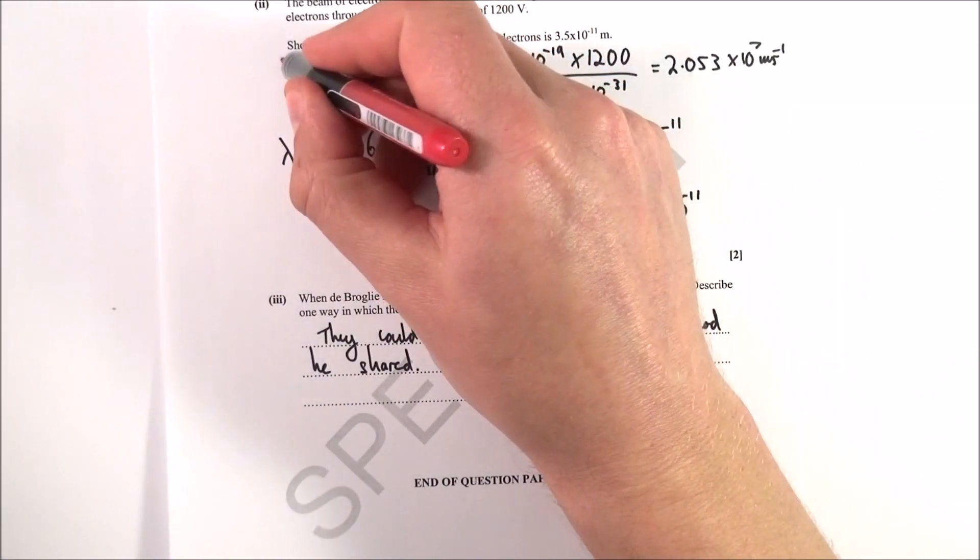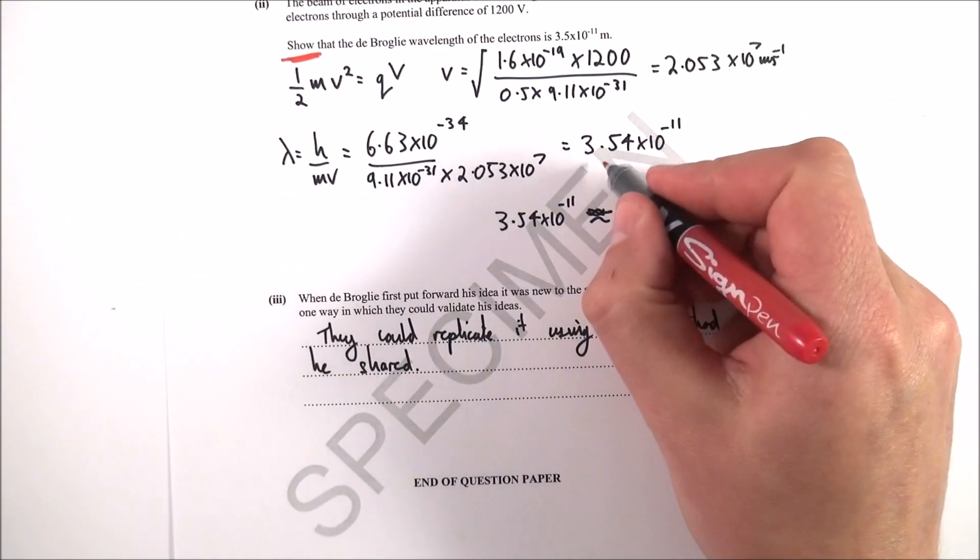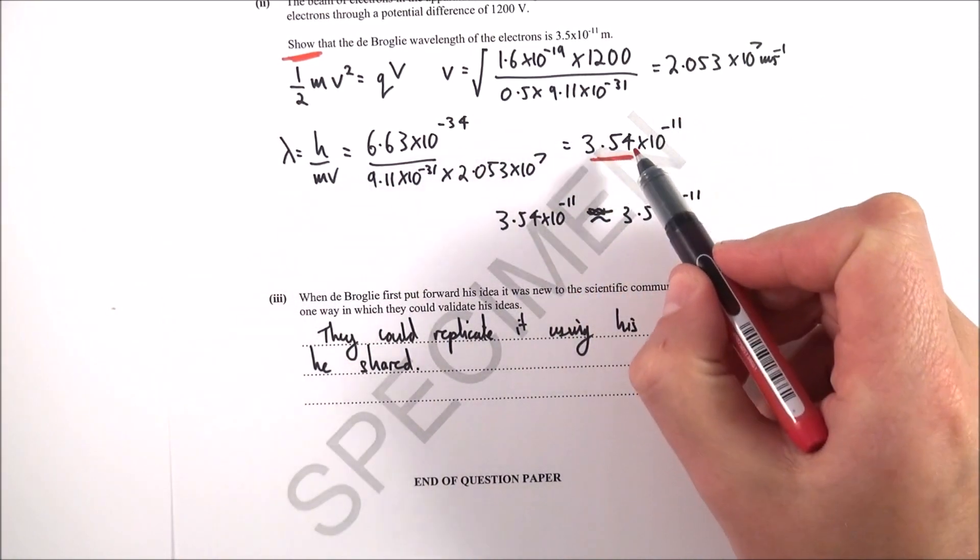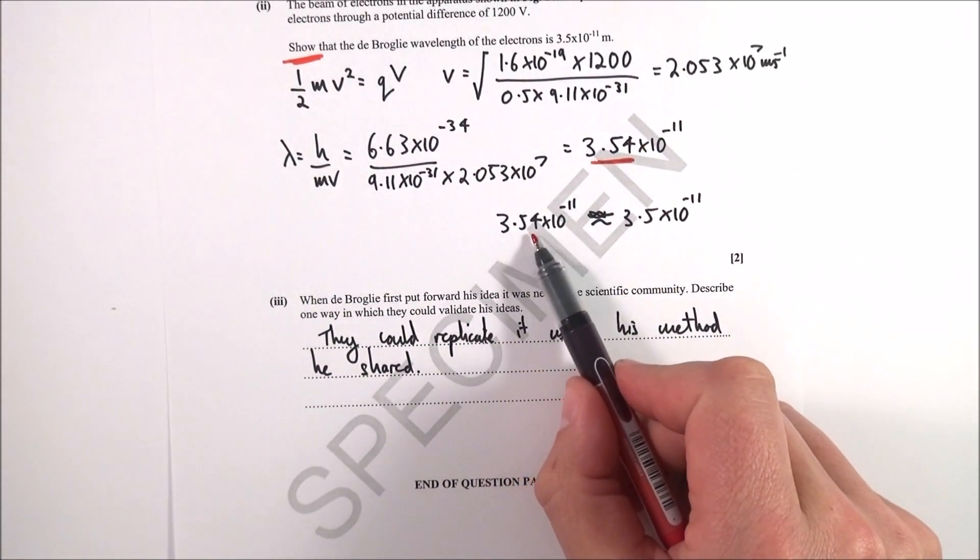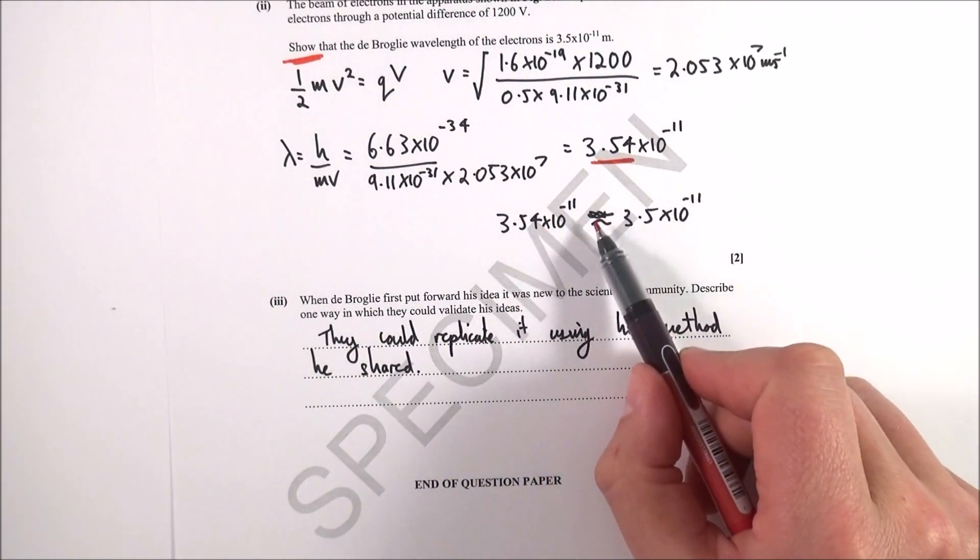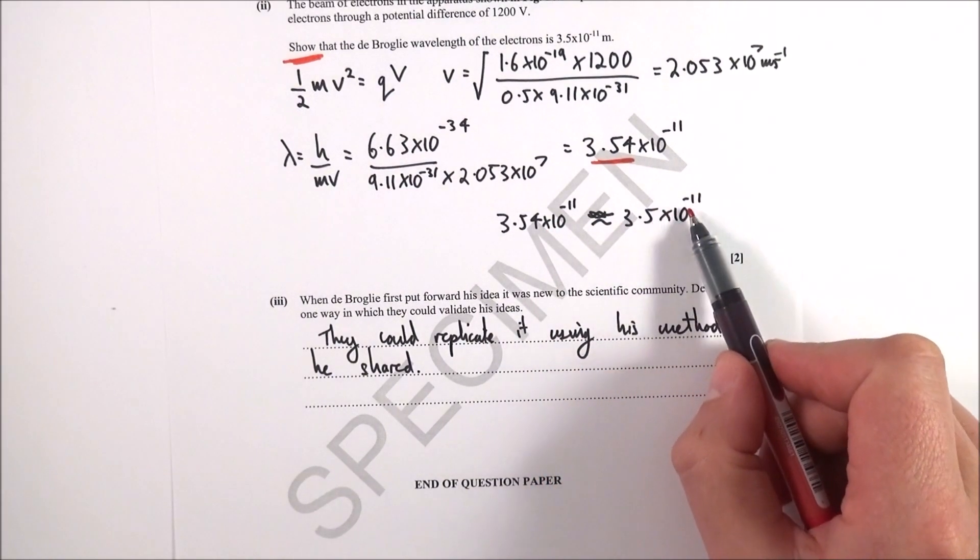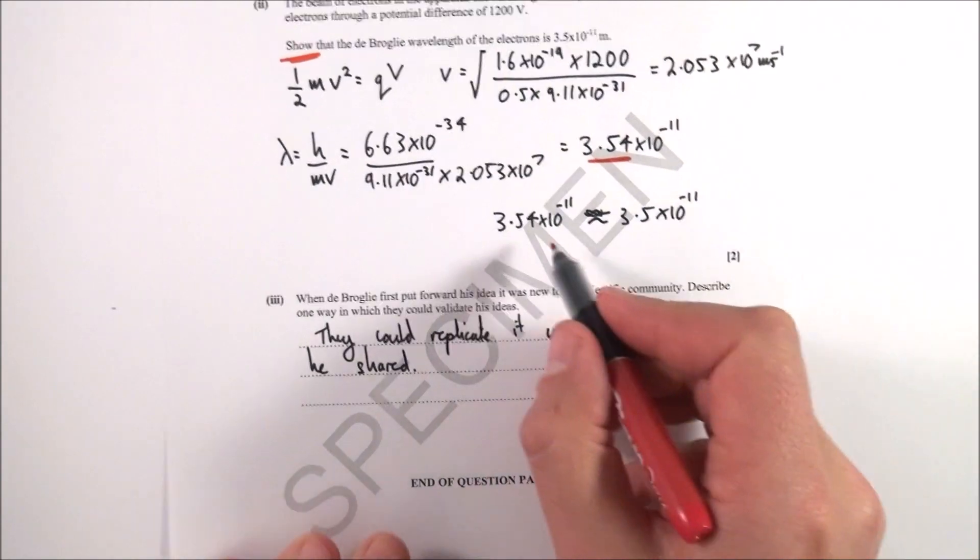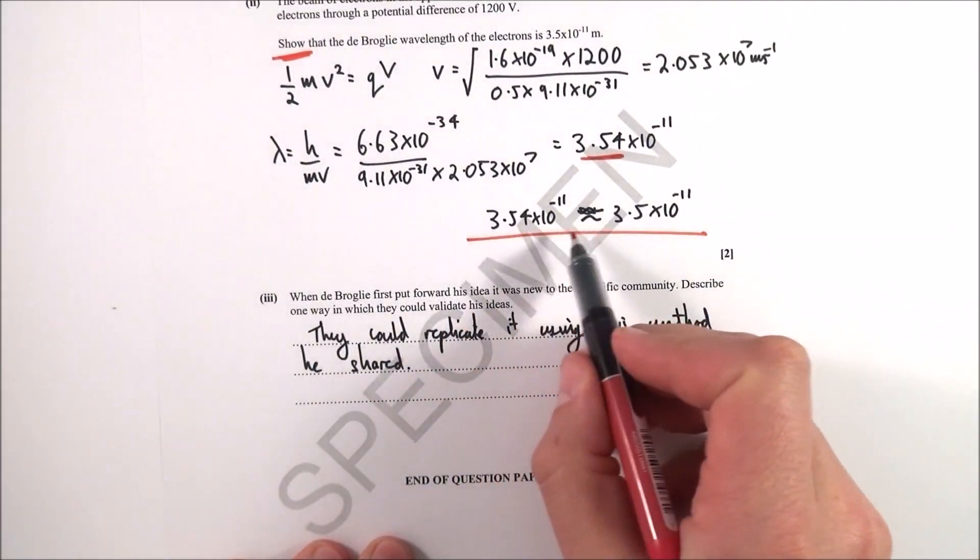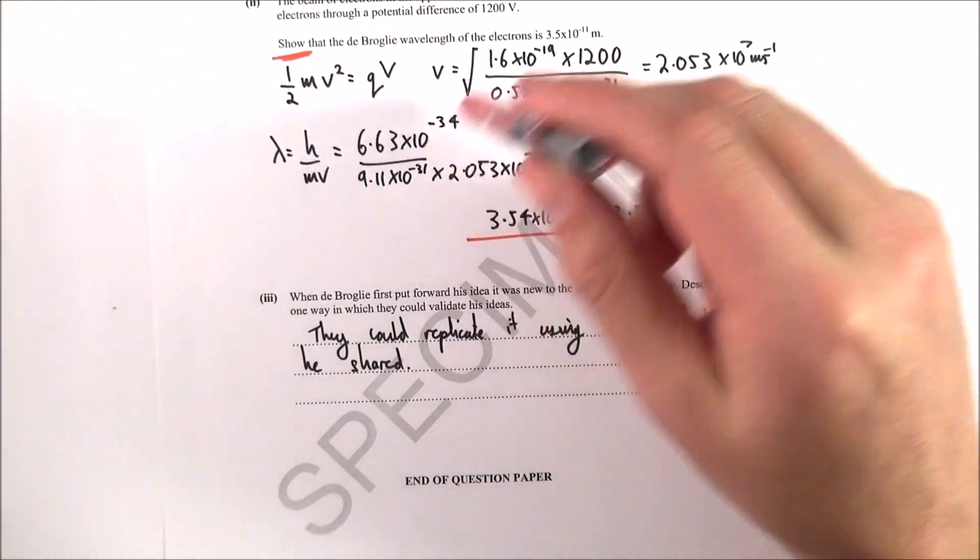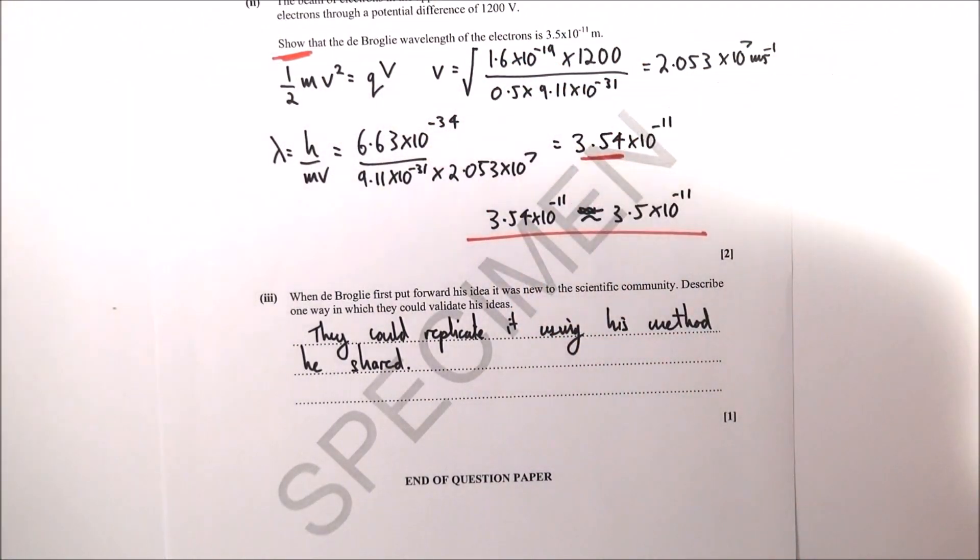This is important—it's a 'show that' question. I've given the answer to one more significant figure, so I can say 3.54×10^-11 is approximately equal to 3.5×10^-11. This last sentence really shows you've done the calculation yourself, not just put random numbers in hoping for the right answer.